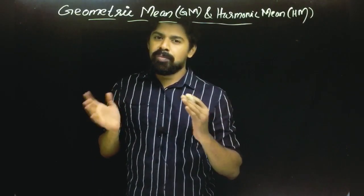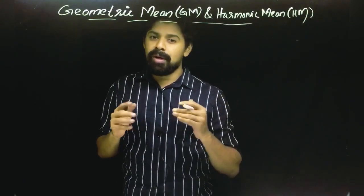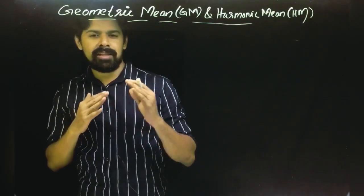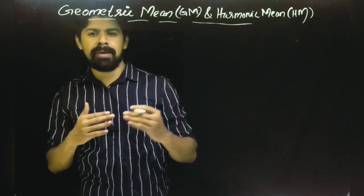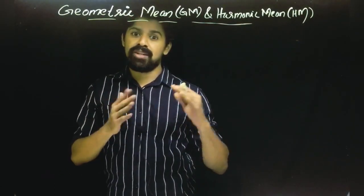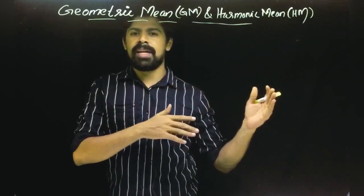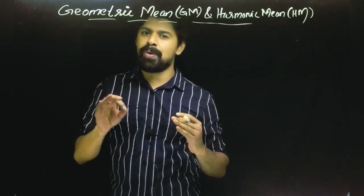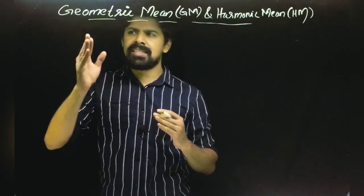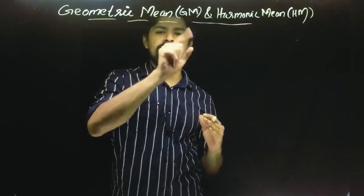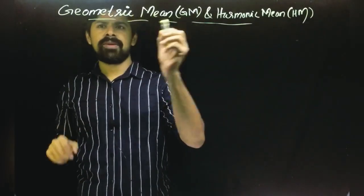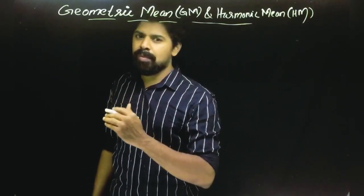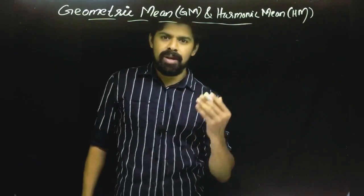We are going to start with arithmetic mean, median and mode. Following that, we will move on to geometric mean and harmonic mean — GM and HM. The math section covers how we are going to work with these formulas.